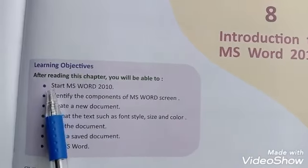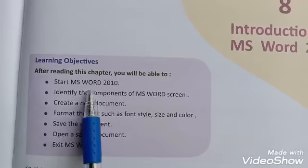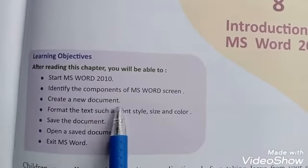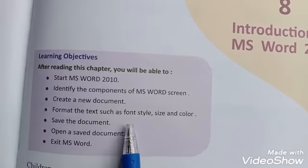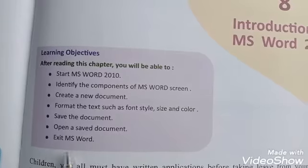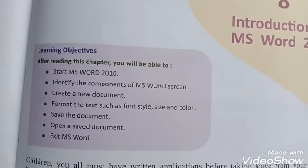First point is start MS Word 2010, identify the components of MS Word screen, create a new document, format the text such as font style, size and color, save the document, open a saved document, and exit MS Word.